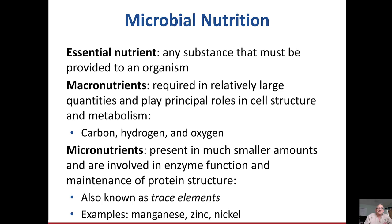Essential nutrients are any substance that must be provided to an organism for it to grow — things they absolutely have to have. Macronutrients are required in relatively large quantities, like water, and play principal roles in cell structure and metabolism; these include carbon, hydrogen, and oxygen. Micronutrients are required in smaller, trace amounts — such as manganese, zinc, iron, and nickel. They serve various smaller functions but are absolutely required; if you don't include them, the organisms won't grow.